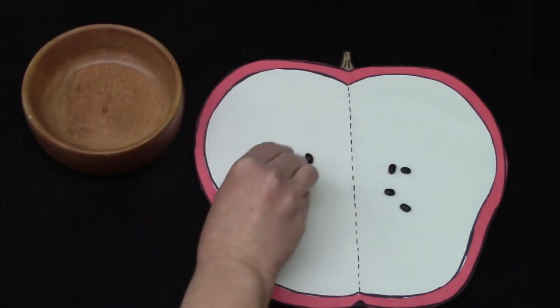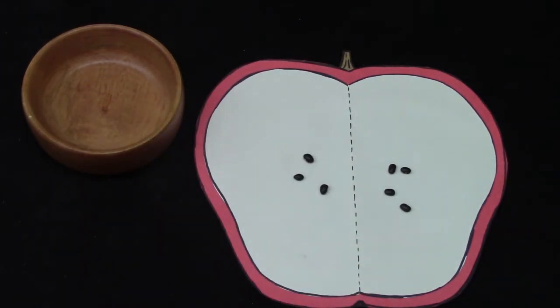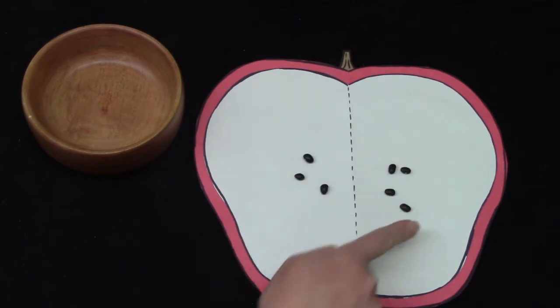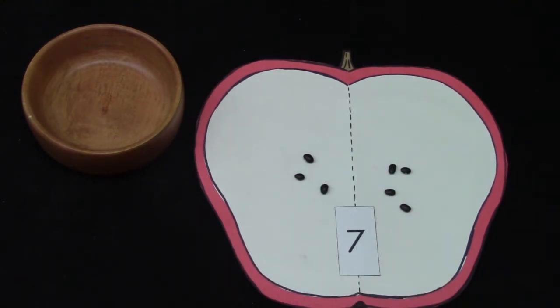Well on this side, I'm only going to put three. Hmm, that's not the same. If we were to combine these, how many seeds would there be all together? Count with me. One, two, three, four, five, six, seven. You're right, there are seven seeds.